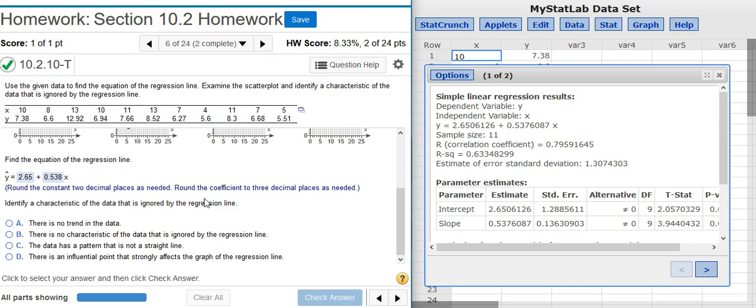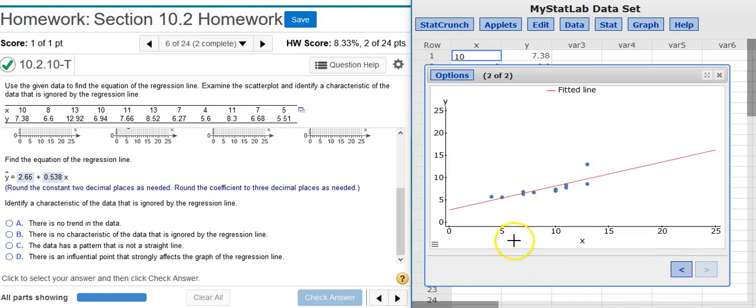The last part of the problem says identify a characteristic of the data that is ignored by the regression line. If we look at the different answer options here, let's examine them one by one. The first one here says there's no trend in the data. Well, if I go back to my scatter plot, there's definitely a trend in the data. Most of the data here fits this regression line pretty well. There is no characteristics of the data that is ignored by the regression line. Well, maybe, maybe not. Let's check out the other answer options. If the others don't pan out, then this one's obviously going to be the one that's right.